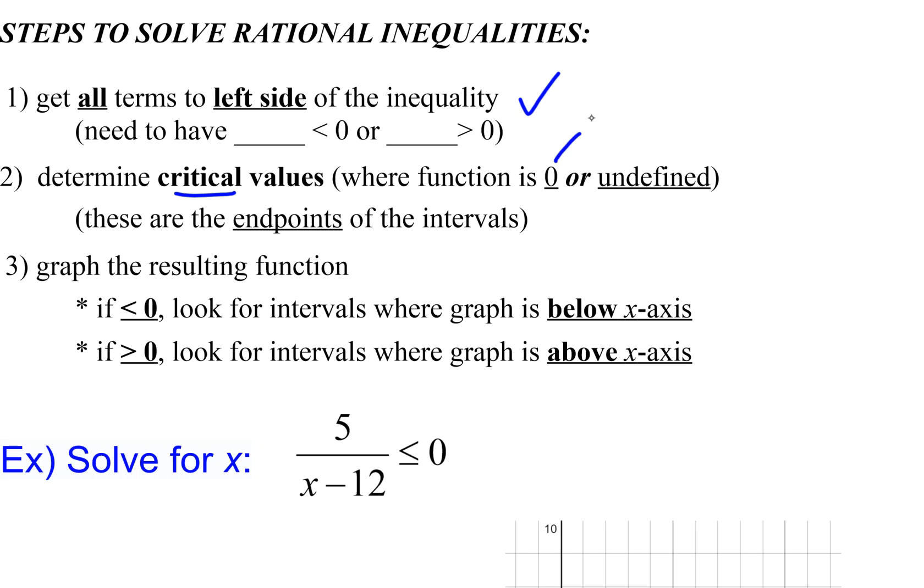Remember, a function is going to be zero if we have an x-intercept or the zeros of the numerator. It's undefined when we have zeros of the denominator - those are the vertical asymptotes. So we're looking for zeros of the numerator and zeros of the denominator, and those are going to be the endpoints for our intervals.